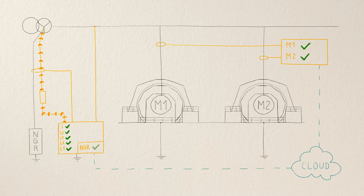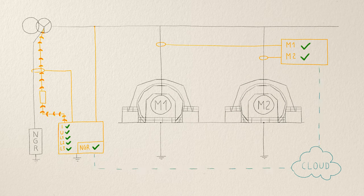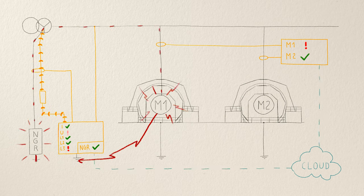At critical points within the plant, current transformers are installed which will indicate if there is a ground fault on the load side of the CT.